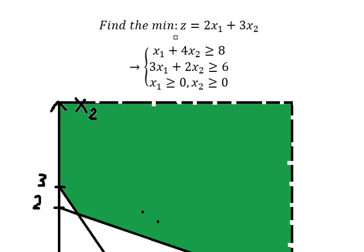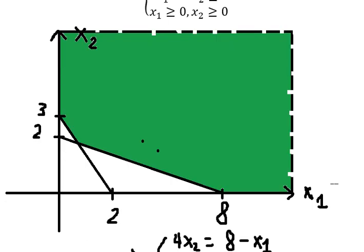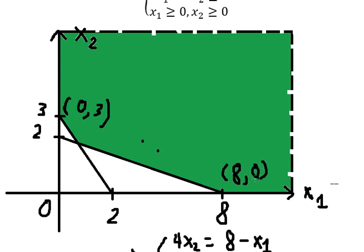The question asks us to find the minimum, so we need to find all the corner points of the feasible region. The first corner point has s1 equals zero and s2 equals three. The second corner point has s1 equals zero, and now we need to find the intersection.